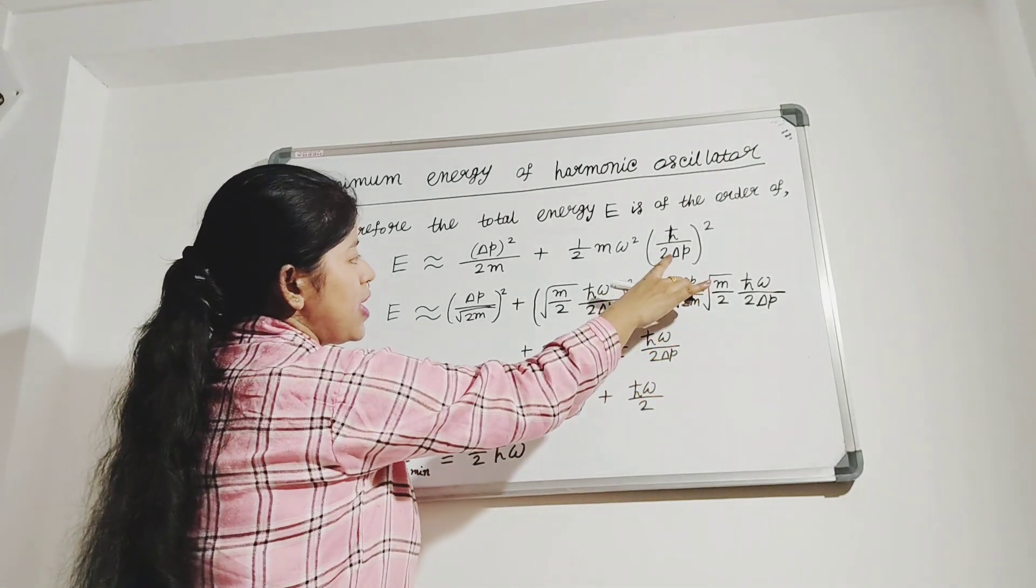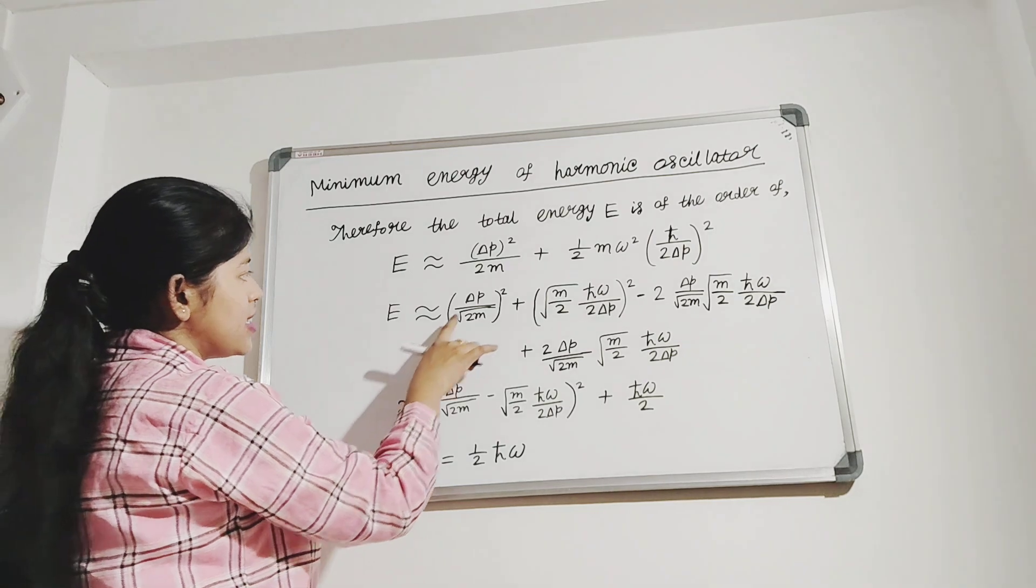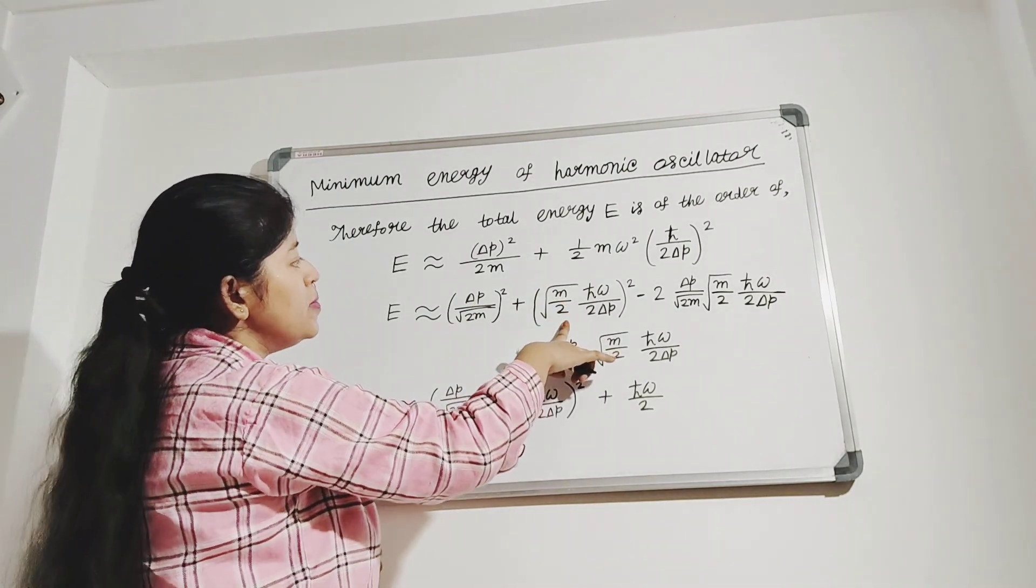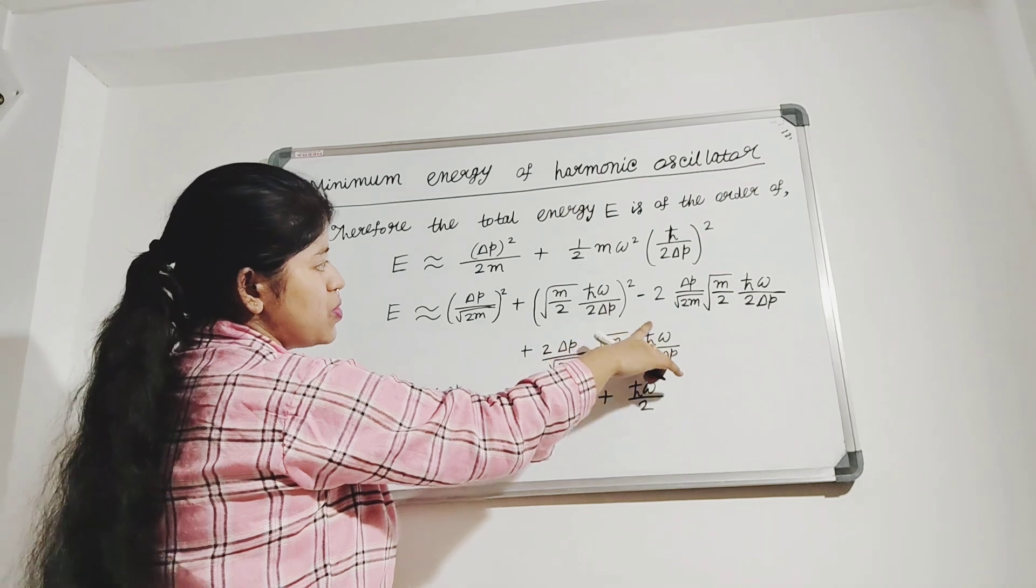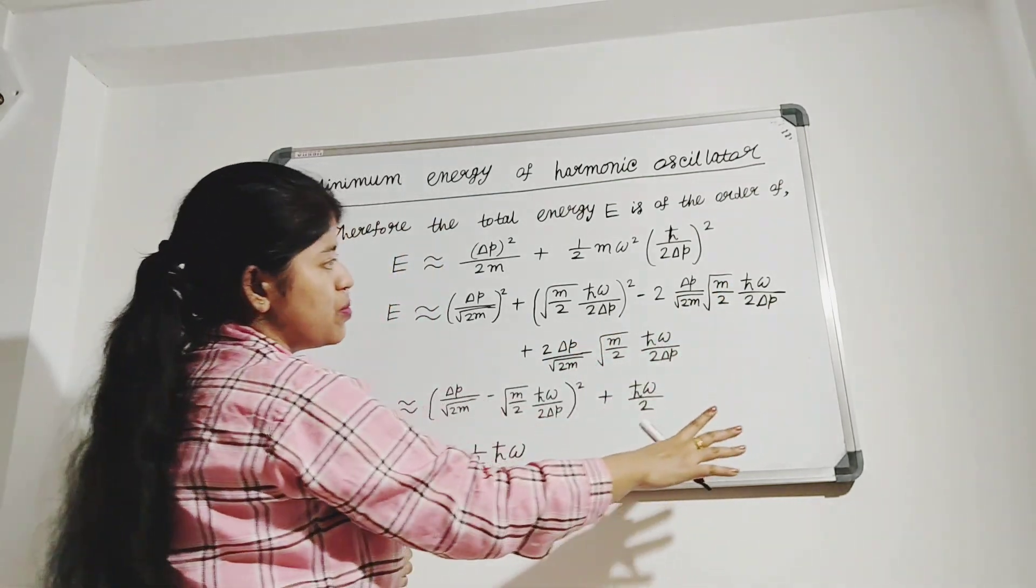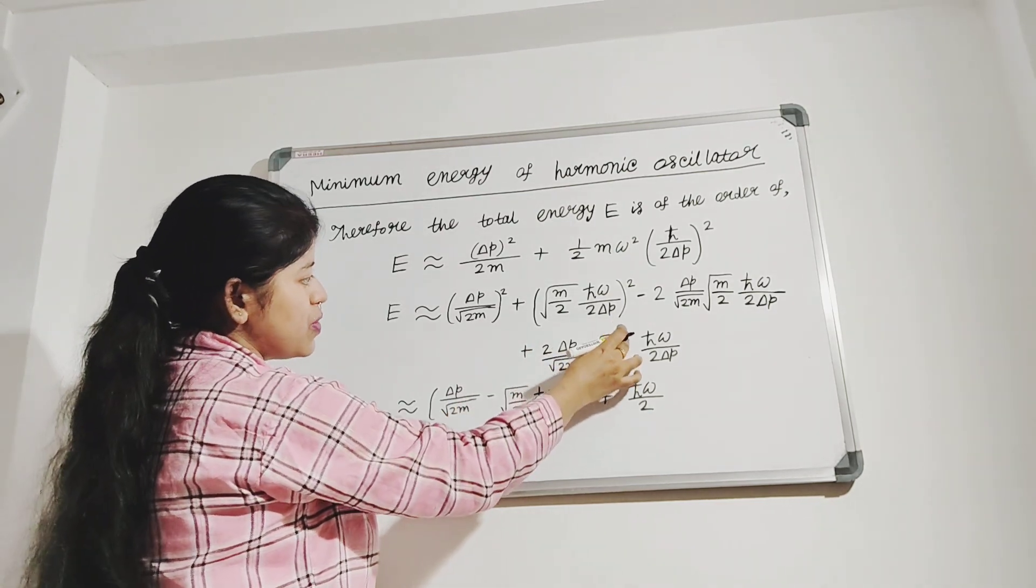Here we have used the value of delta x in terms of delta p. Now we can write E in terms of delta p by root over 2m squared plus root over m by 2 h-cut by 2p squared minus 2 delta p by root over 2m root over m by 2 h-cut omega by 2 delta p plus 2 delta p by root over 2m root over m by 2 h-cut omega by 2 delta p.